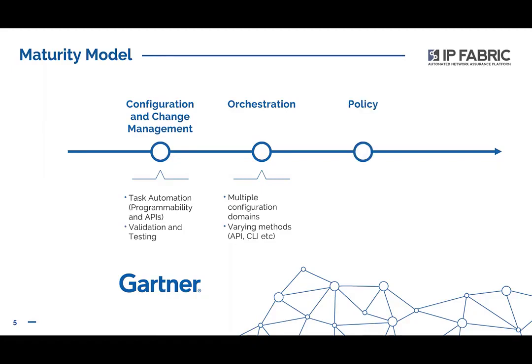In parallel with orchestration, Gartner refers to a policy phase. This is where a configuration domain is changed to refer to a centralized policy repository, typically for security, and the configuration of individual devices is simplified and standardized to a template. This enables two things: fast rollout of new policy by changing the central repository and pushing that data out to devices, and easy replacement of devices at failure or upgrade by simply swapping out the device, applying the standard config which refers back to the policy engine.